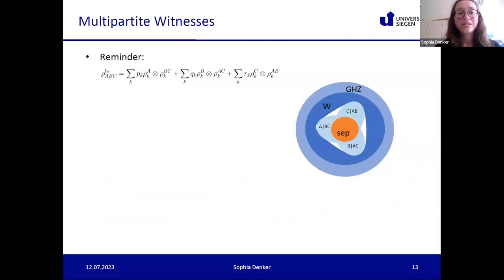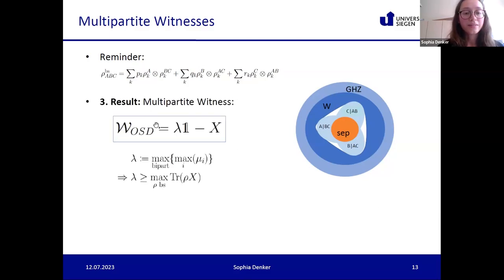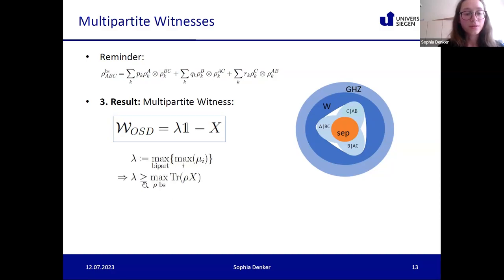The next result is how to construct witnesses for multipartite entanglement. Recalling that we want our witness to be positive on all biseparable states, the third result is that the OSD witness in the multipartite case is given by lambda times identity minus X, where lambda is the largest operator Schmidt coefficient mu_1 taken over all possible bipartitions — very similar in structure to the fidelity witness. One can show that this lambda is always larger than the maximum expectation value of X over all biseparable states, confirming it is indeed a witness.